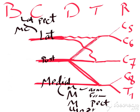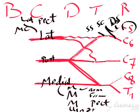We have small branches. First, the C5 root gives the dorsal scapular nerve, which supplies rhomboids major, rhomboids minor, and levator scapulae. C5 and C6 roots form the nerve to subclavius. The upper trunk itself gives the suprascapular nerve, which supplies supra- and infraspinatus muscles.